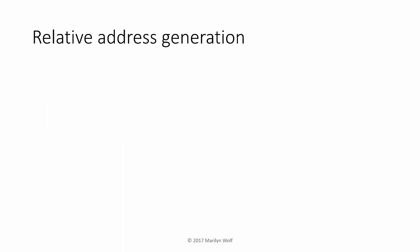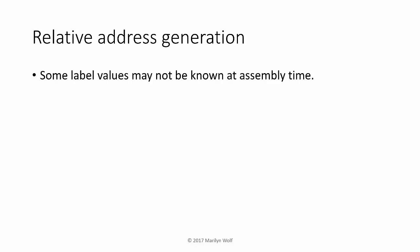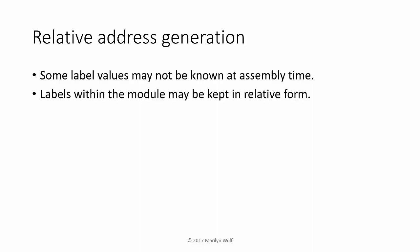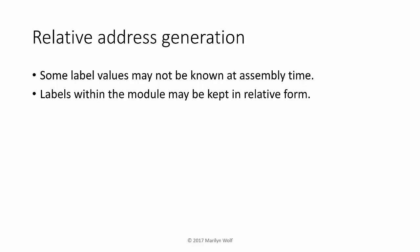We want to build a program out of more than one module, so we don't always have all the addresses when assembling a given piece of code — that means we need to use relative addresses. We may not have all labels and their values when assembling a given module, so we use relative addresses until we know all modules and all their labels. We need to track external labels; we can't generate full binary for an instruction that uses one. So we generate an intermediate binary form that remembers certain values are relative, not absolute, and patch in absolute addresses later.